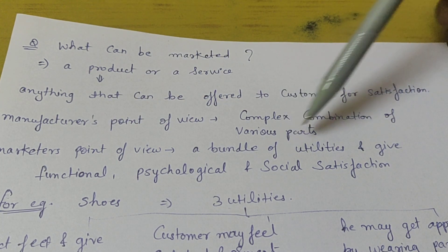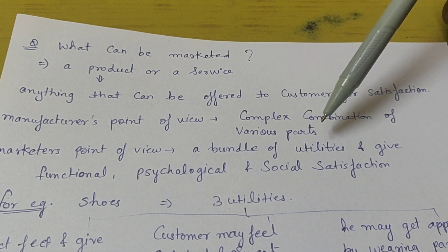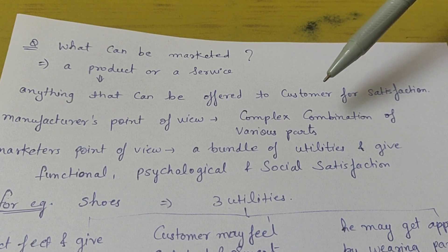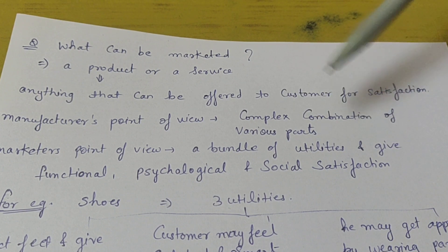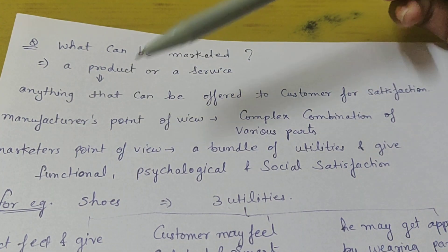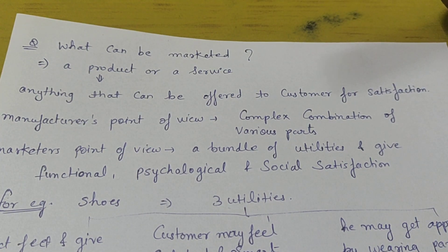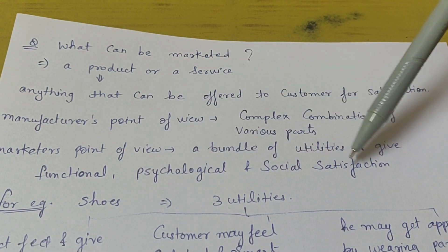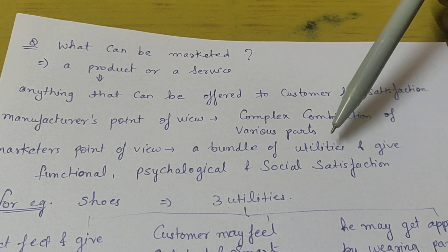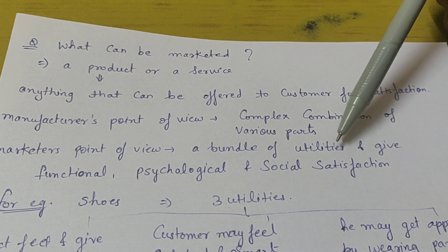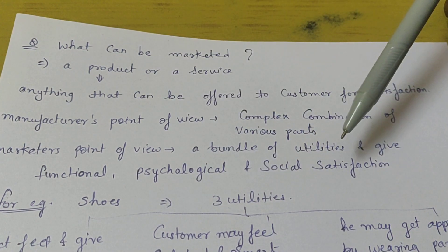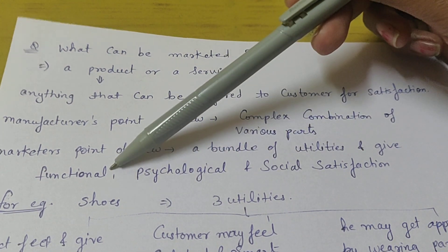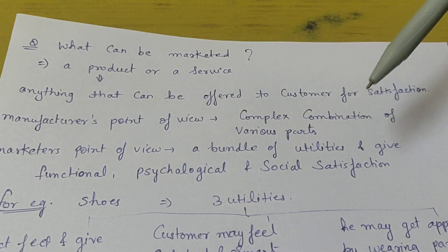A product is a complex combination of various parts — complex combination, difficult to understand. But for a marketer, a product is a bundle of utilities that gives functional, psychological, and social satisfaction. So according to a marketer, any product provides these three types of satisfaction.